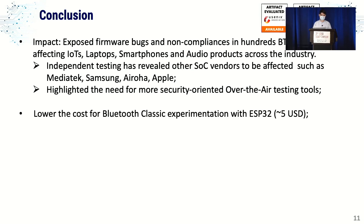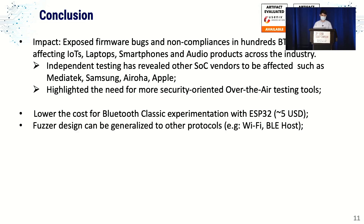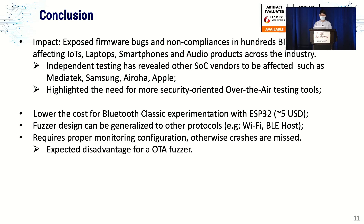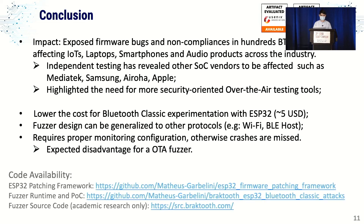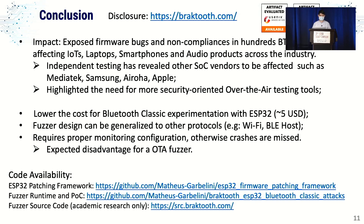This work also enabled lower-cost Bluetooth Classic experimentation — the ESP32 is a cheap device you can get working for around $5. We showed the fuzzer can be generalized to Wi-Fi and BLE. One disadvantage is that, as an over-the-air approach, monitoring matters — without it, the fuzzer may miss crashes. The code is available on GitHub for the patching framework and fuzzing interface, and the source code can be requested via the provided links. A disclosure link is also available for details on each vulnerability. Thank you all.